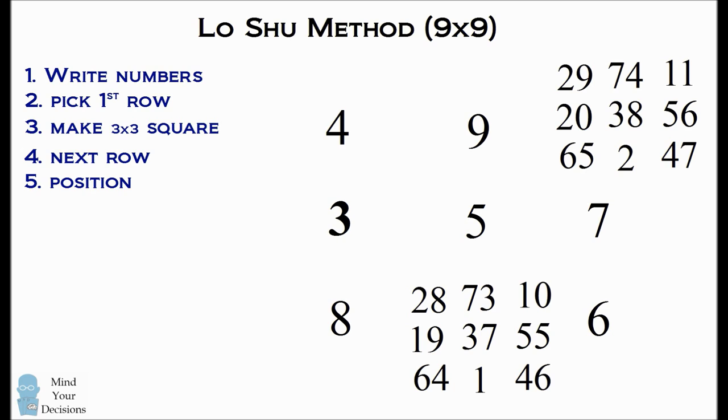We then repeat the process for the number 3. The number 3 is in the second row in the first column. We delete it.